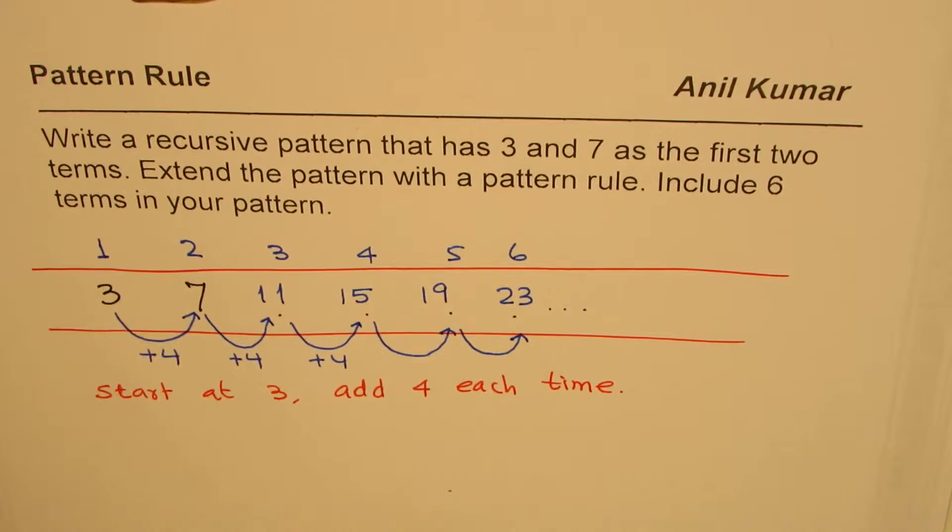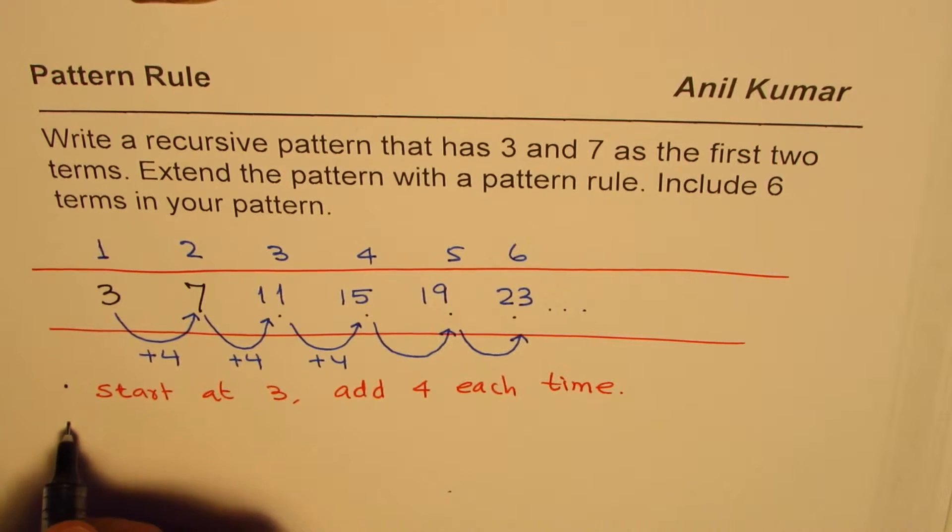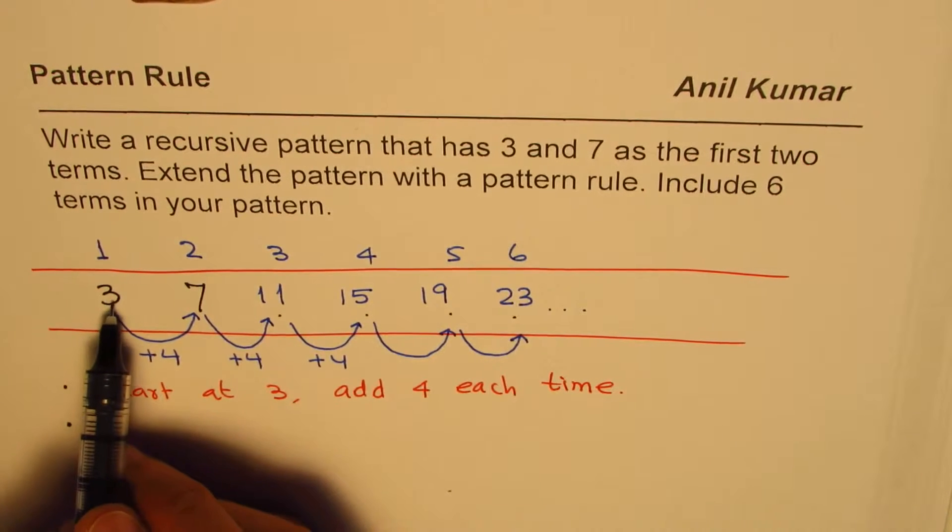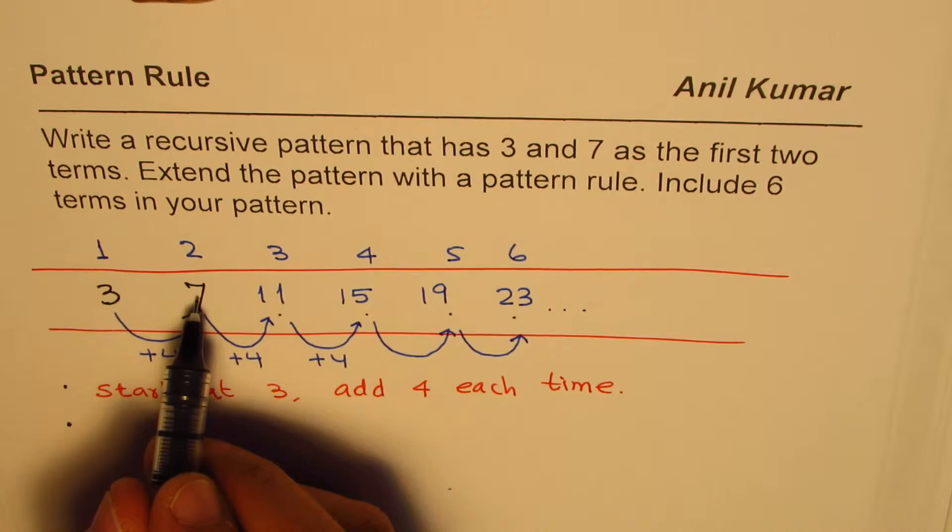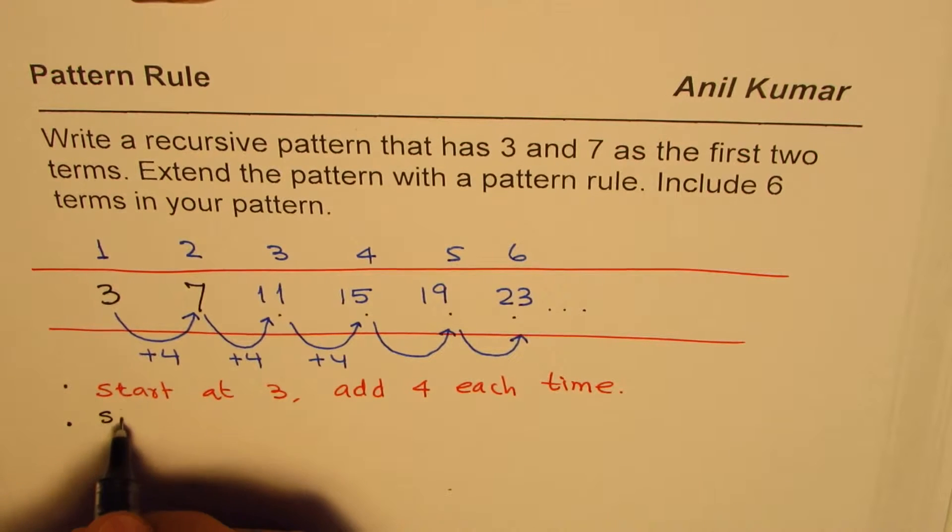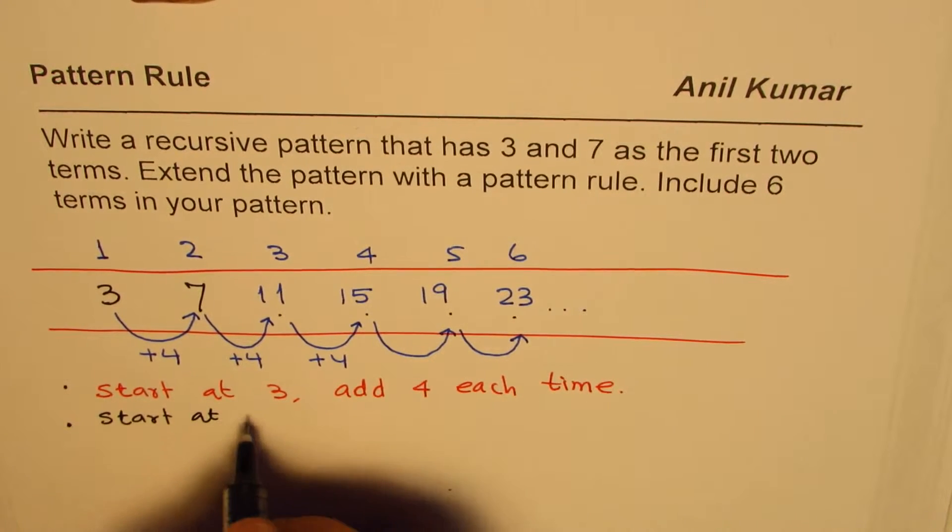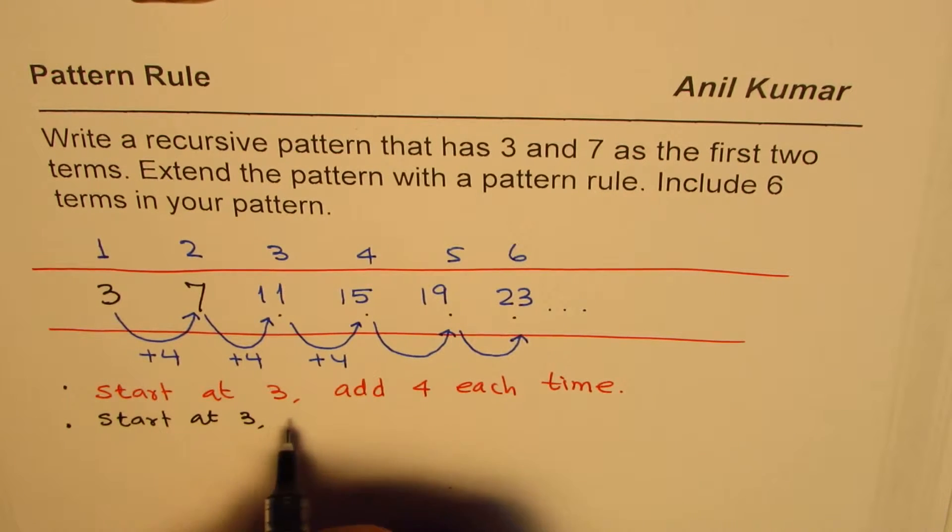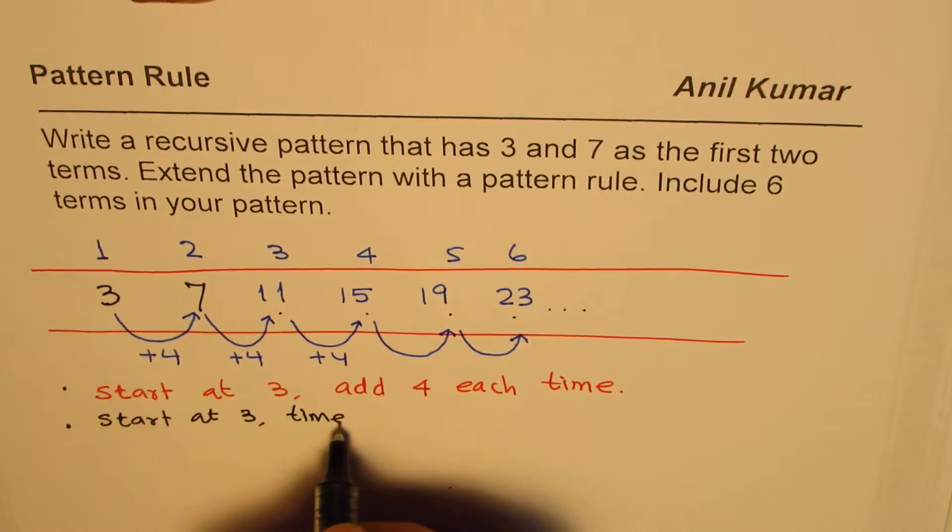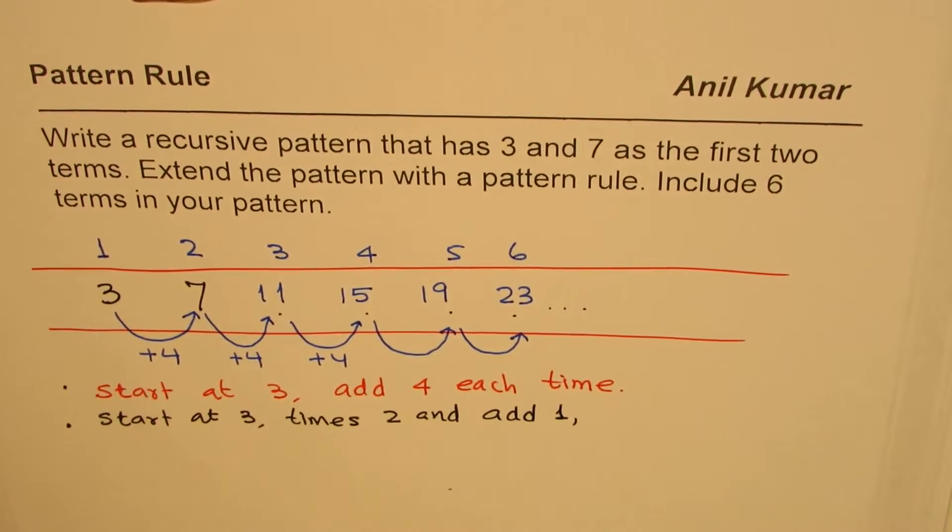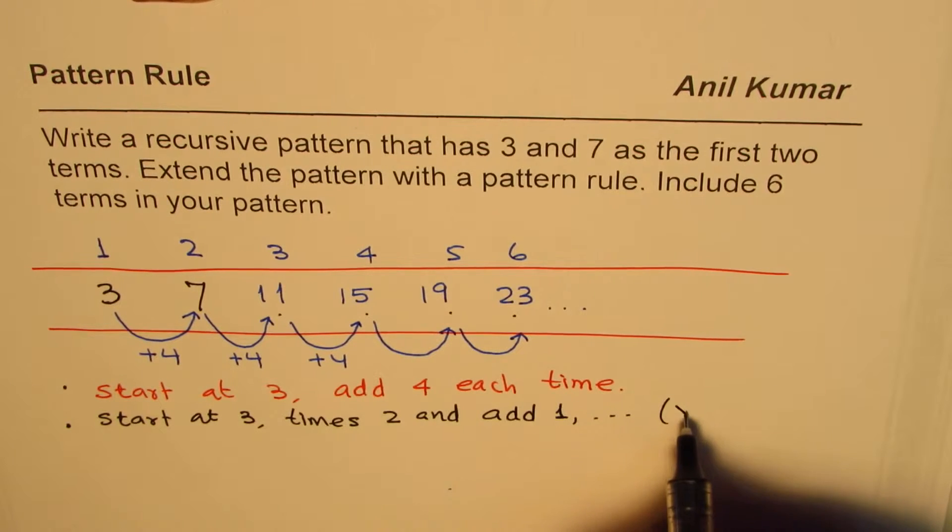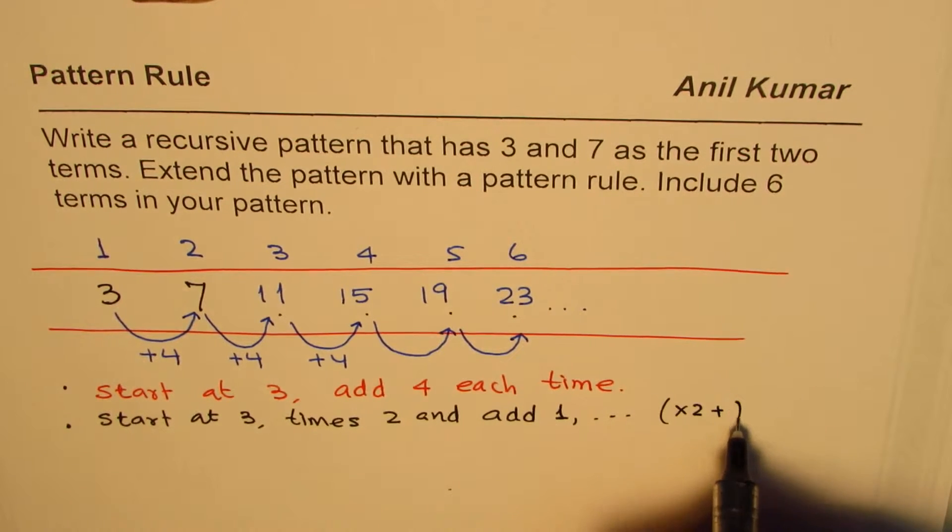That's how you would actually get a pattern as described. We could have many different rules also. Here's a complicated one: from three, the next number we can get seven if we do times two and add one. So we could say start at three, and then what do we do? Times two and add one.